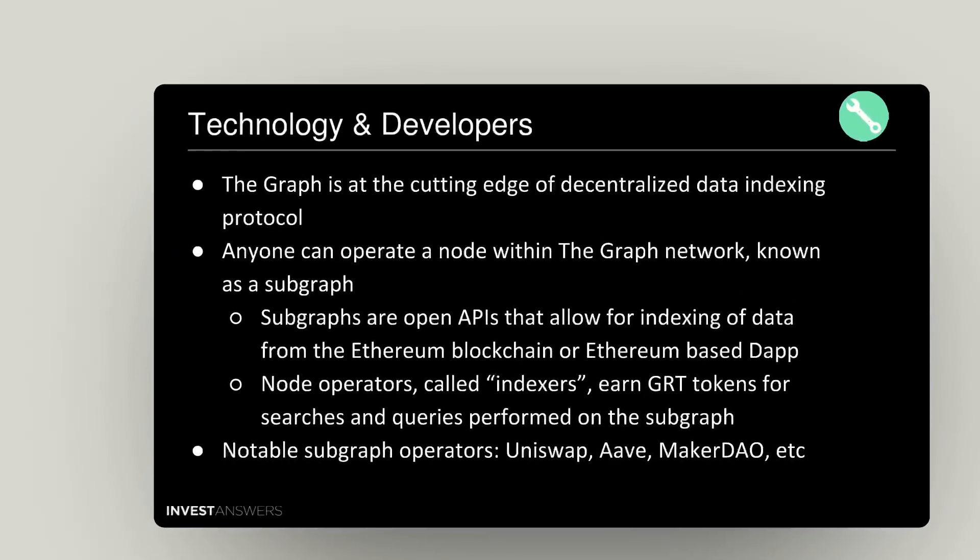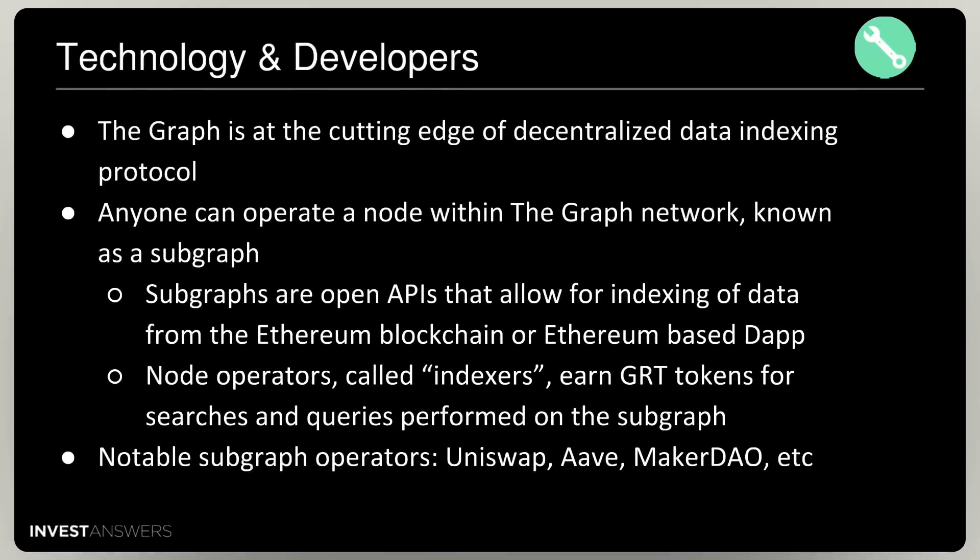Let's talk about technology and the developers. Graph is at the cutting edge of decentralized data indexing protocol. Anyone can operate a node within the graph network known as a subgraph. Subgraphs are open APIs that allow for indexing of data from the Ethereum blockchain or an Ethereum-based dApp. The node operators are called indexers, and they earn GRT tokens.